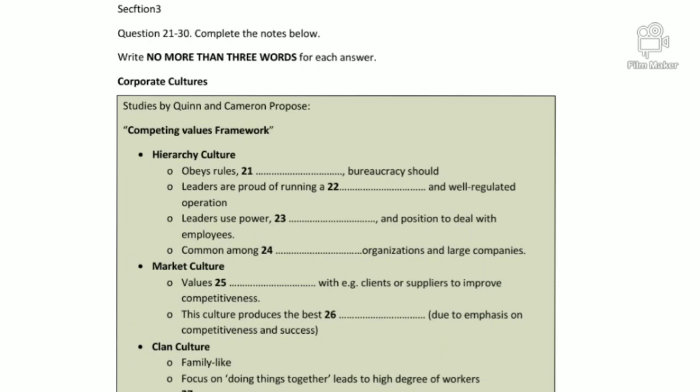Then I move on to discuss market culture — very popular in the 1960s and quite similar to the hierarchy culture in that it also emphasizes stability and control. But the main point of difference is that market culture attaches a great deal of importance to external relationships with stakeholders such as customers, suppliers and creditors. These associations are important because successful interactions with these people would increase the company's productivity.